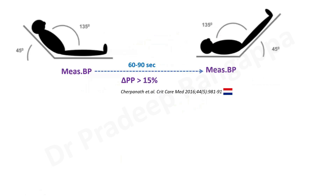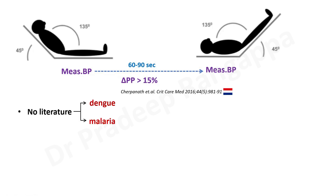Many clinicians now perform the passive leg raising test. To ascertain fluid responsiveness using this test, you can use a simple arterial line and look at pulse pressure. You measure blood pressure and pulse pressure, raise the legs, and after 60 to 90 seconds, measure again. If the delta pulse pressure is more than 15%, it indicates fluid responsiveness. This was shown in a 2016 study by a Thai group. However, there is no robust literature on this in tropical diseases like dengue and malaria.